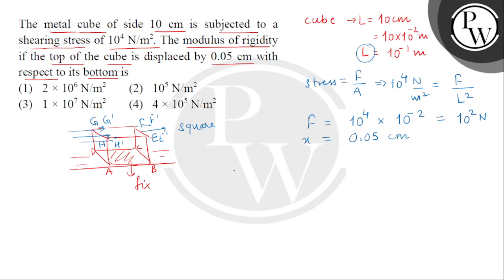अब हमें find करना है modulus of rigidity, which means eta. This equals tangential stress divided by strain. tangential stress का answer तो directly given है as shearing stress.